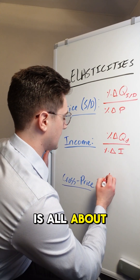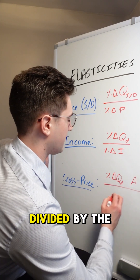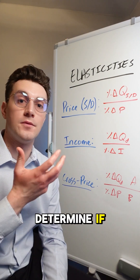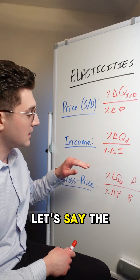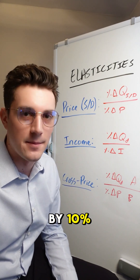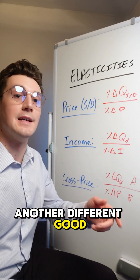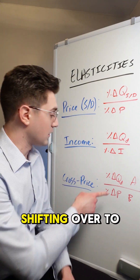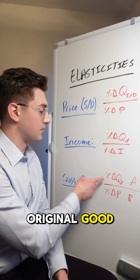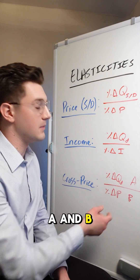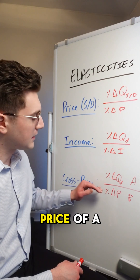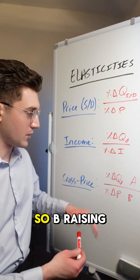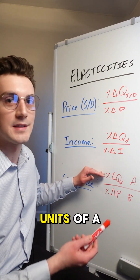Cross-price elasticity of demand is the percent change in quantity demanded of good A divided by the percent change in price of good B. We use this to determine if two goods are substitutes or complements. For example, if the price of a given good increases by 10% and the quantity demanded of another good increases by 5%, that means consumers are shifting to the other good — substituting — so the two goods are substitutes. If this value is negative, the goods are complements: the price of good B rising causes the quantity demanded of good A to decrease, because both goods are now more expensive to purchase together.